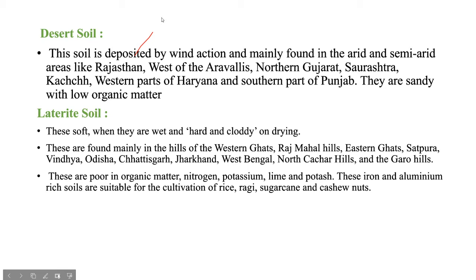Next, Desert Soil. Desert soil is mostly deposited by wind action, found in arid and semi-arid areas like Rajasthan. There is very low humus in the desert area because there are very few trees. So, humus is very low and soil fertility is very low.